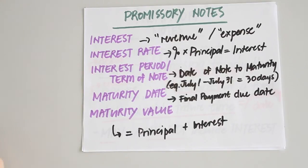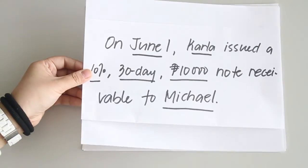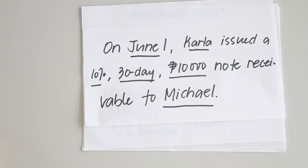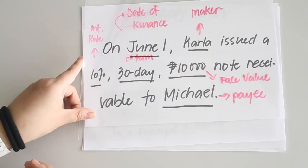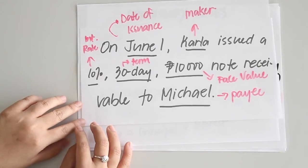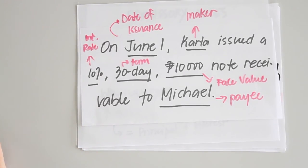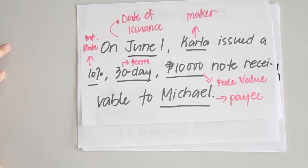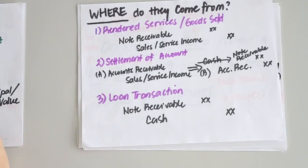Here is an example to identify the important terminologies. On June 1, Carla issued a 10%, 30-day, 10,000-peso note receivable to Michael. From this, the key elements are: date of issuance — June 1; maker — Carla; payee — Michael; face value — 10,000 pesos; term — 30 days; and interest rate — 10%.